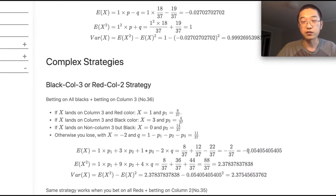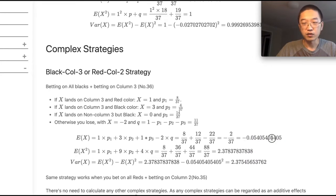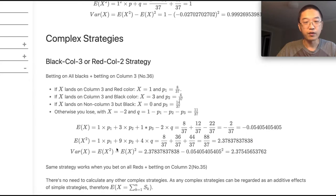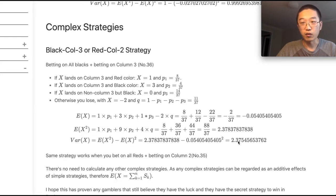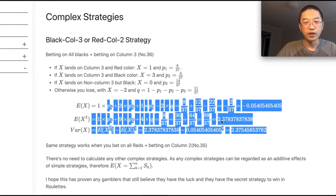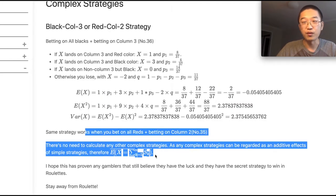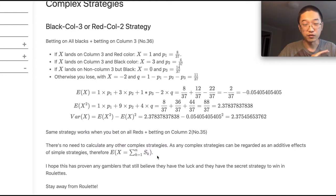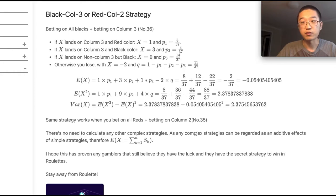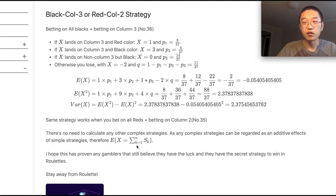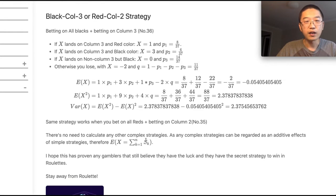So you're actually losing faster. The variance is much smaller, but there's no way you can win. In most cases, you will definitely lose if you continue playing — you'll be broke for sure. There's no need to calculate other complex strategies, as any complex strategy can be regarded as an additive effect of simple strategies. Therefore, the expected return of each play is the sum of those simple strategies. That's why you can't win.